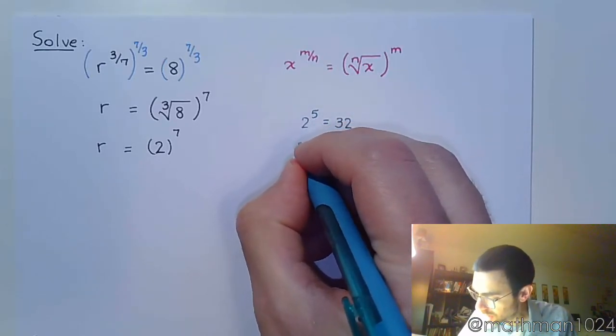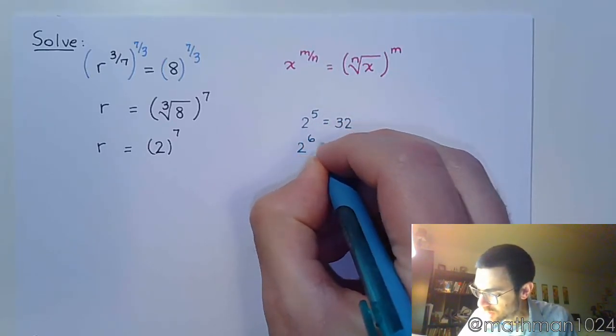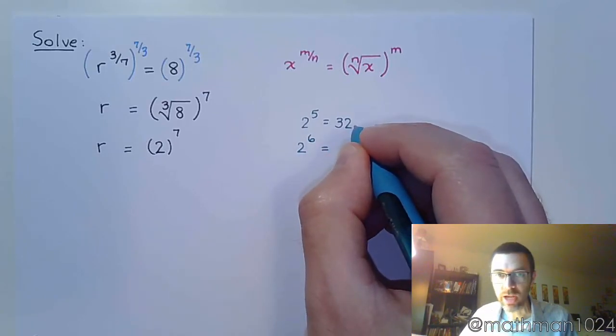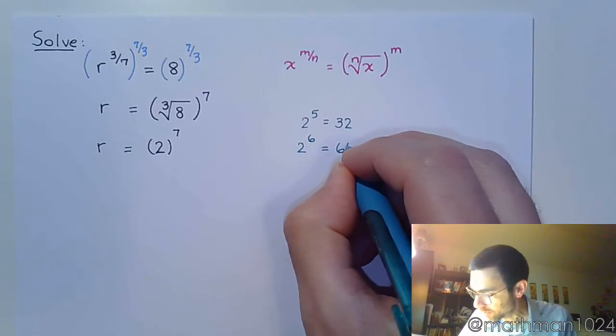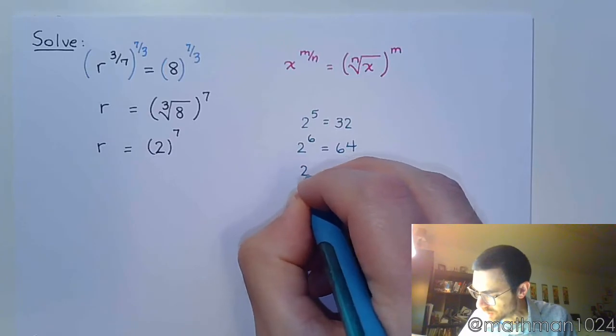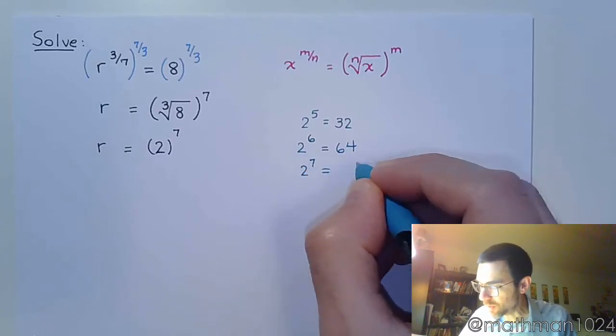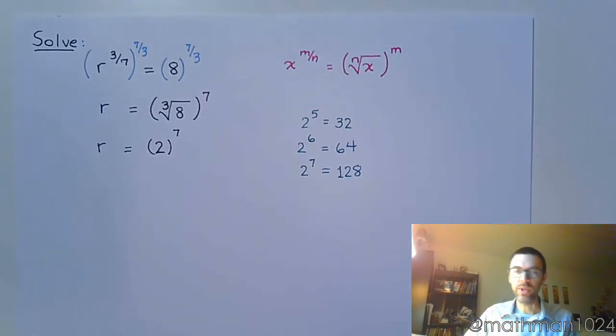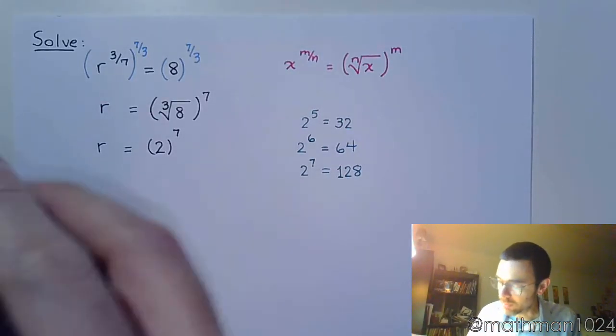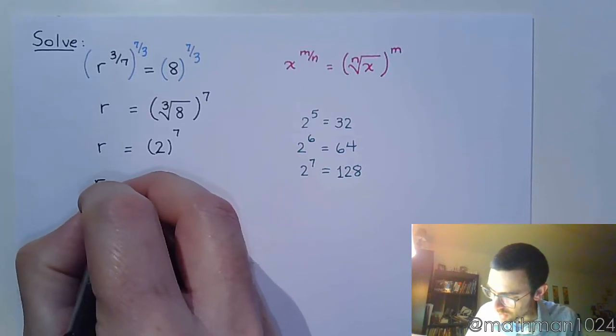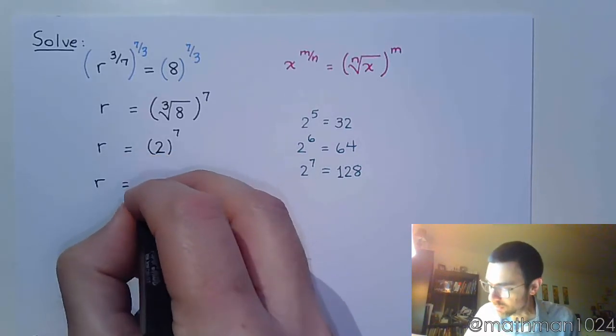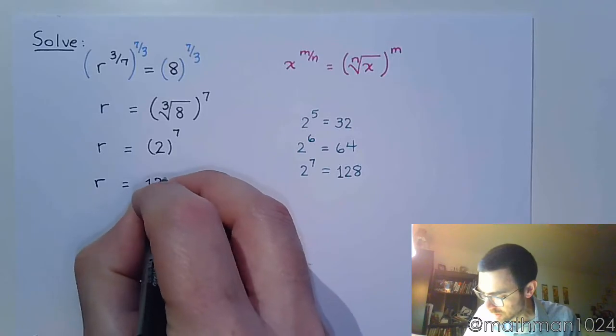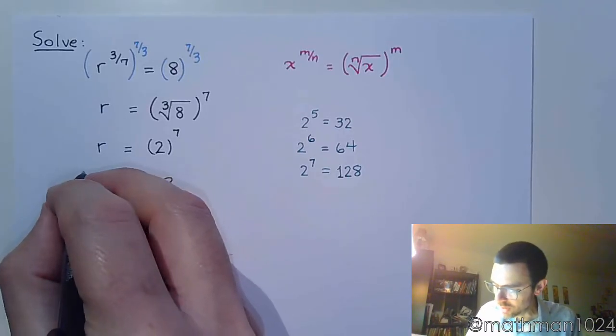So 2 to the sixth is this times 2, so we get 64. And then 2 to the seventh means multiply 64 times a factor of 2, and we get 128. So we didn't have to start at the very beginning - I think that's kind of nice. You start with what you know, get a little bit closer. So r is equal to 128.